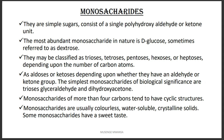If we classify these as aldehydes, that means the carbonyl functional group is at the end of the chain. If the carbonyl functional group is in the middle of the chain, those are going to be ketones. Monosaccharides which have got more than four carbons are going to be found in the ring form, because in that way they are more stable.